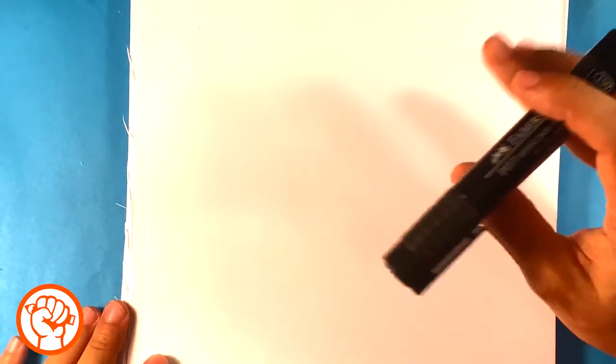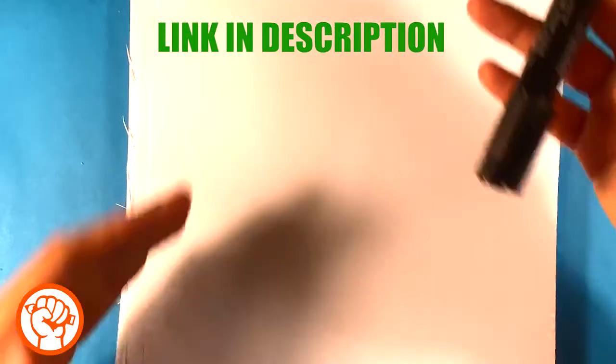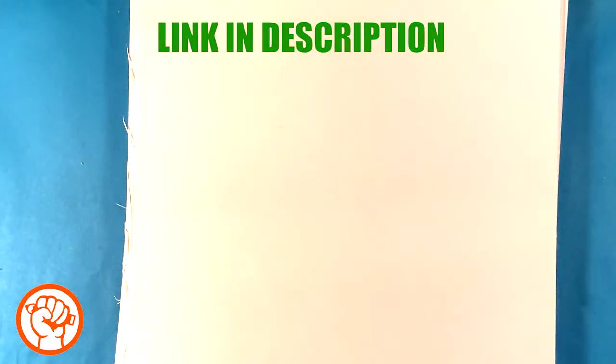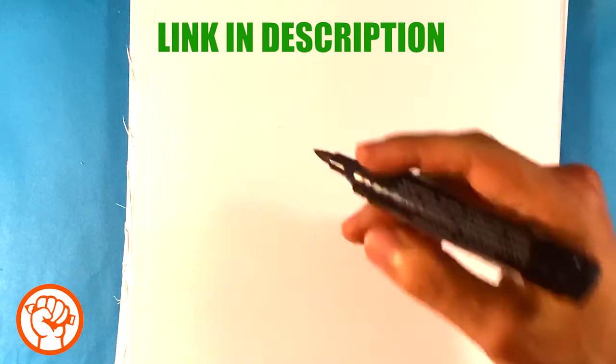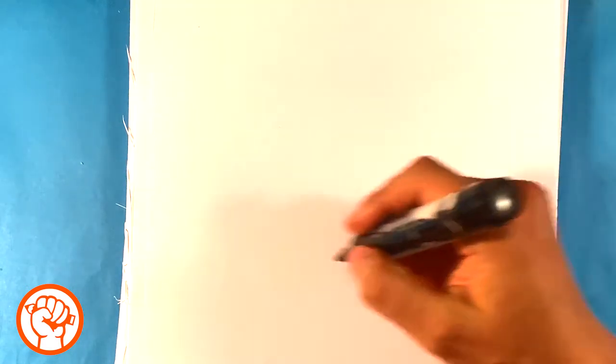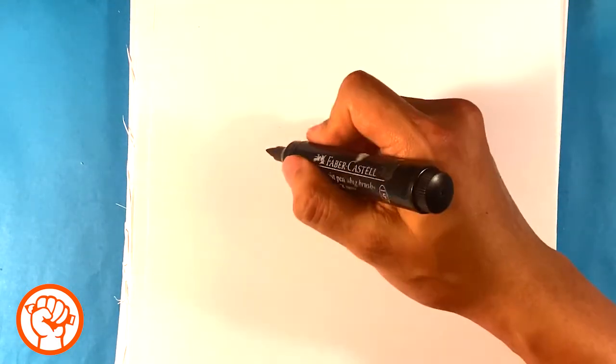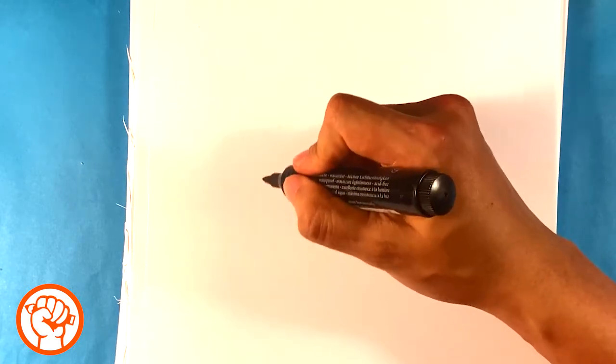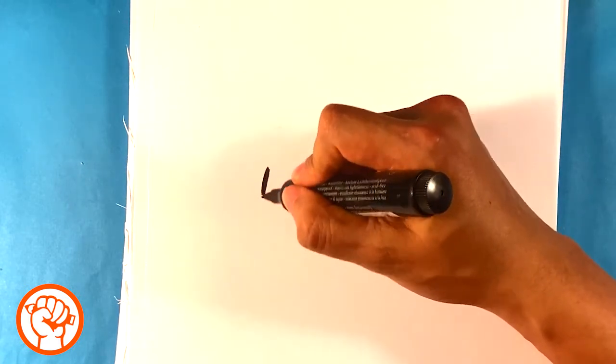Grab a marker, grab a pencil, anything, grab paper. I recommend a marker. And I also have a list of the stuff I use in the description. So you can go check that out later or now you can pause it now. So let's get started. I'm going to draw a circle right here. Start a circle at least.